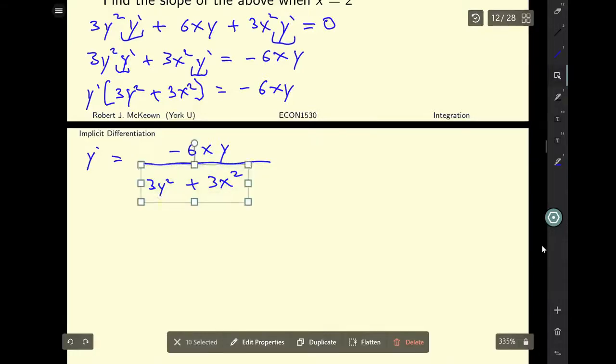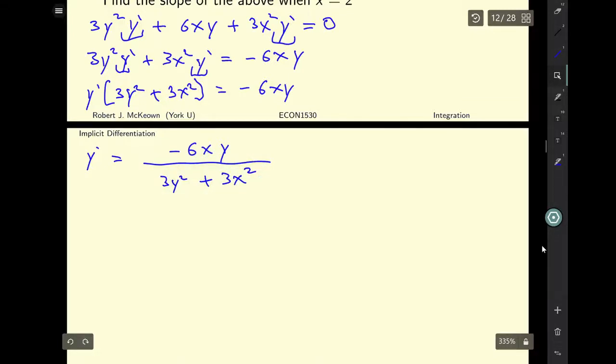I get negative 6xy divided by 3y squared plus 3x squared like so. And looking at it, I don't think there's really too much I can do to simplify this. I guess I could maybe write it like this and factor out the 3 in the denominator. y squared plus x squared.